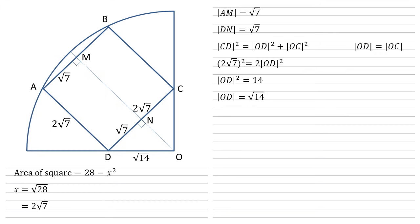We can now use this to find the length of ON because we've got another right angle triangle there, OND, with the right angle at N. So ON must be equal to the square root of the square of OD minus the square of DN. We know that OD is root 14 and DN is root 7, so it's the square root of 14 minus 7. So ON is equal to root 7.